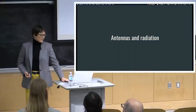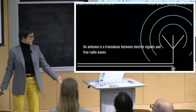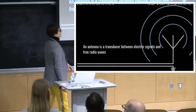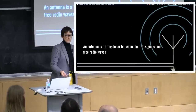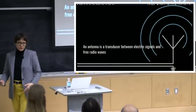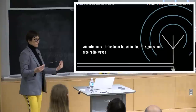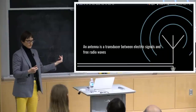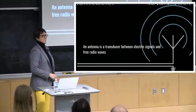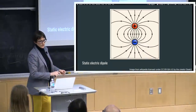To start with, antennas and radiation. An antenna is a transducer that converts electrical signals into freely propagating radio waves. In that sense, it's very much like a speaker or a microphone—those convert electrical signals into sound waves, one way or the other. An antenna does the same thing, but it converts them into radio waves instead.